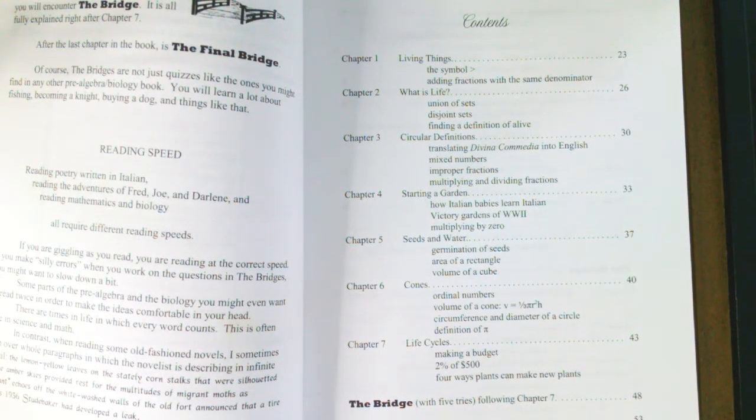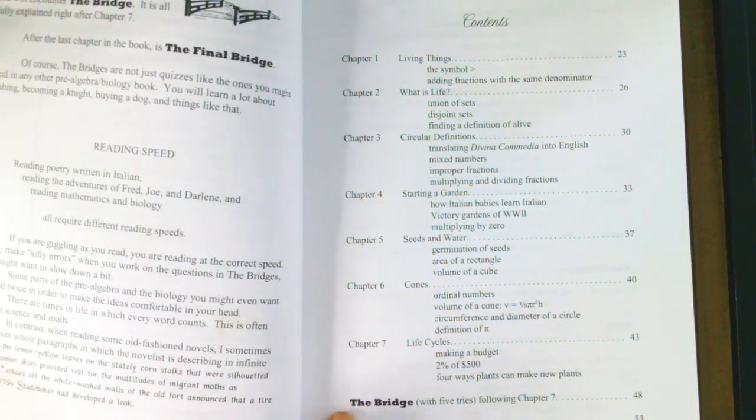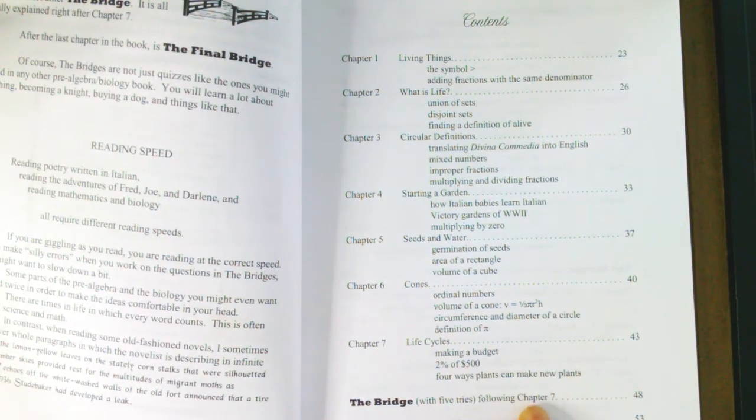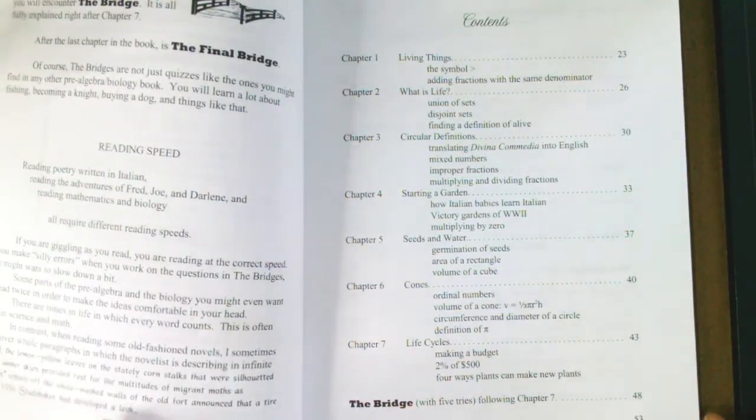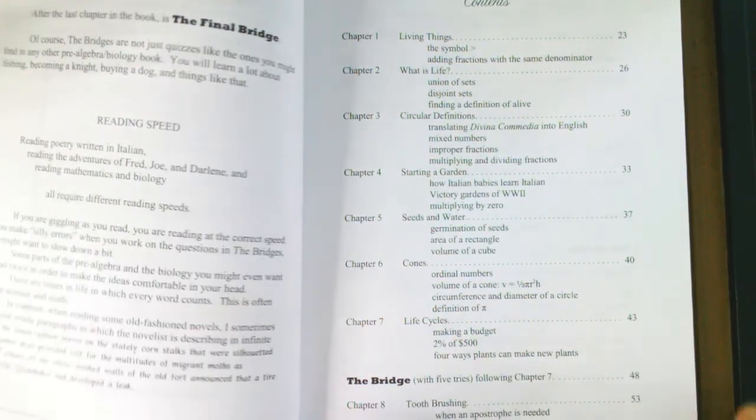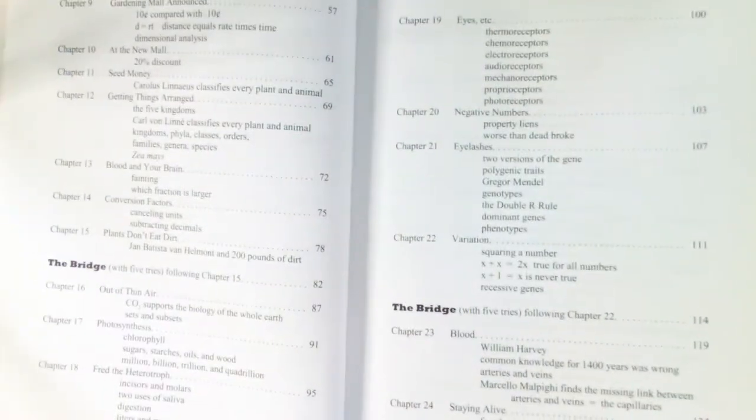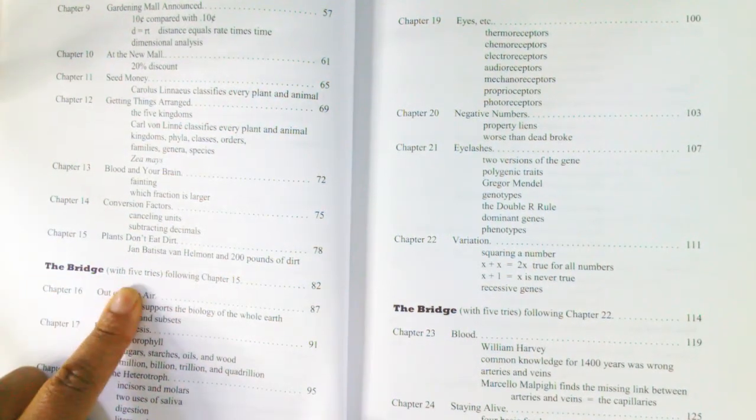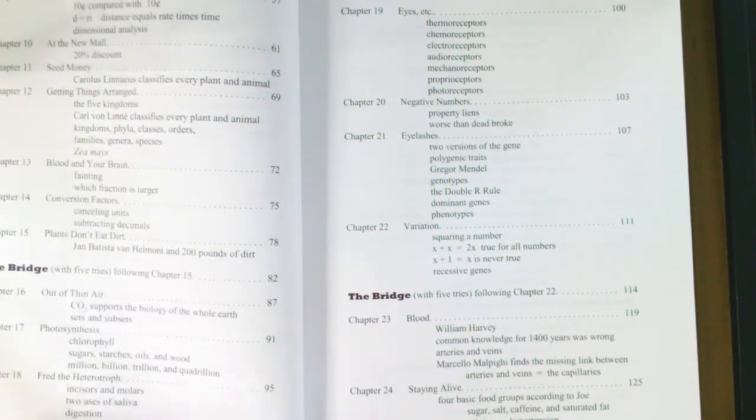Here we have the table of contents. If you notice, after the seventh chapter there is the Bridge, and here it says with five tries following chapter seven. As we continue on, there is a chapter eight as well, and then it is the same way again. Then the Bridge, and we'll look at that a little closely in just a moment.